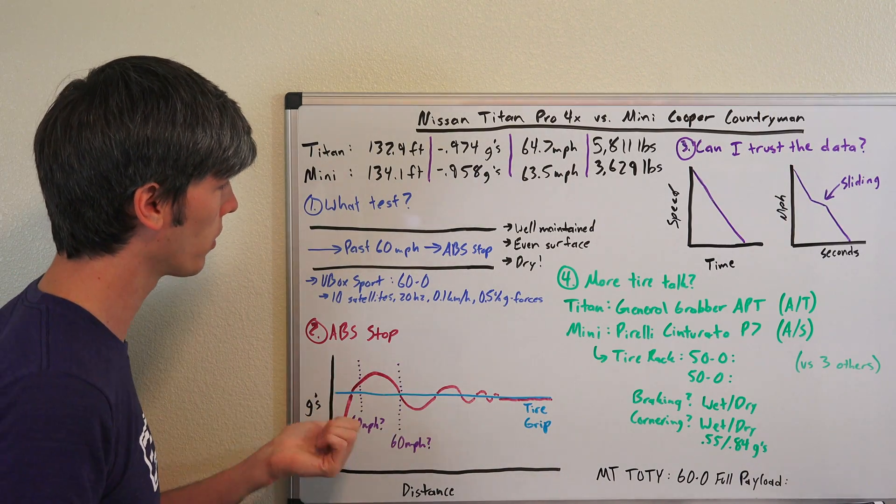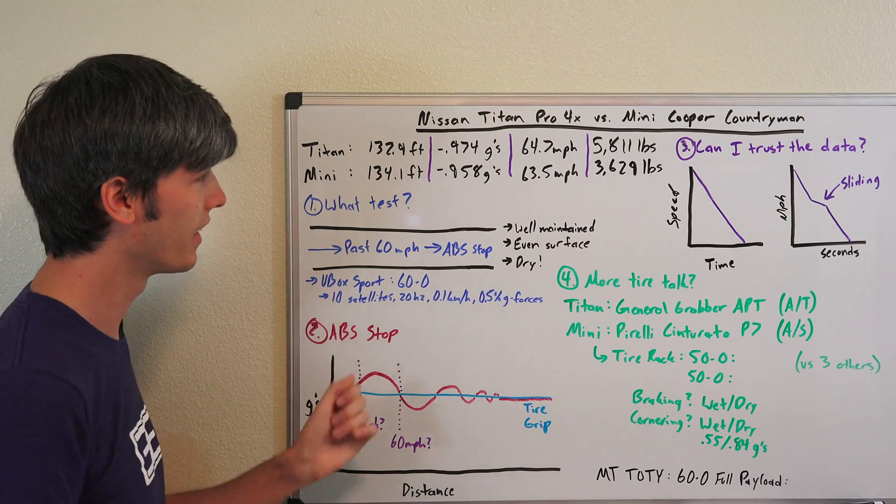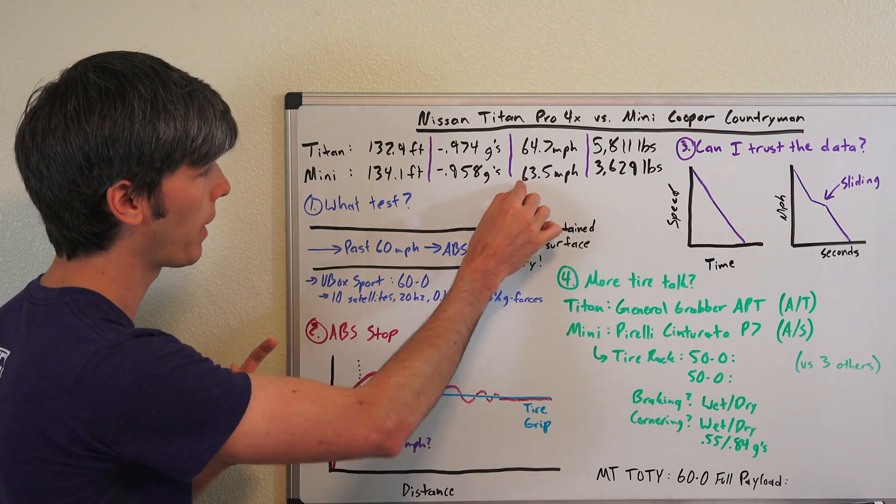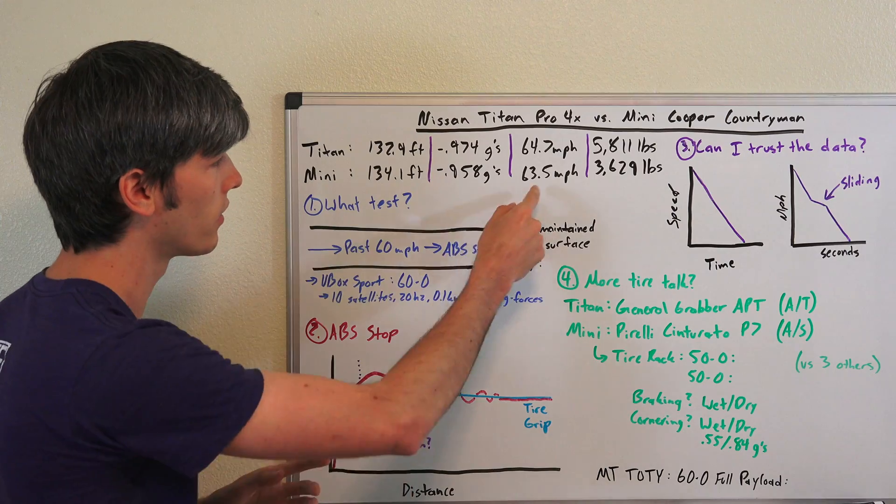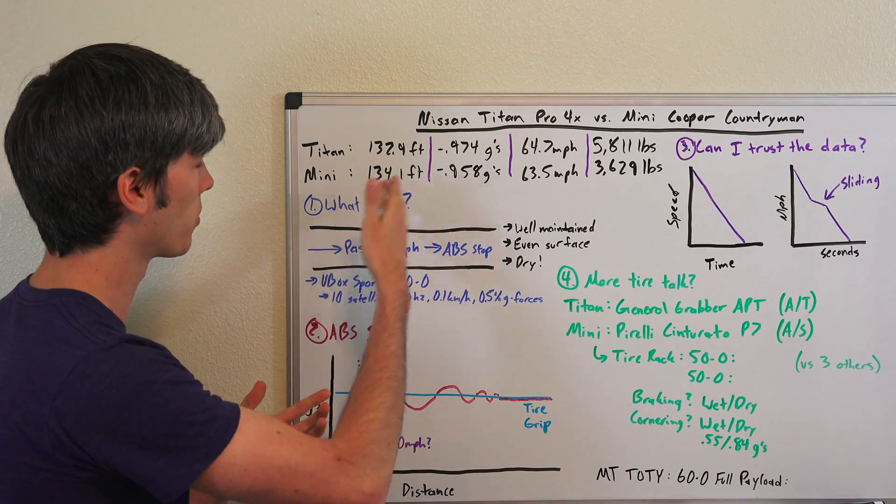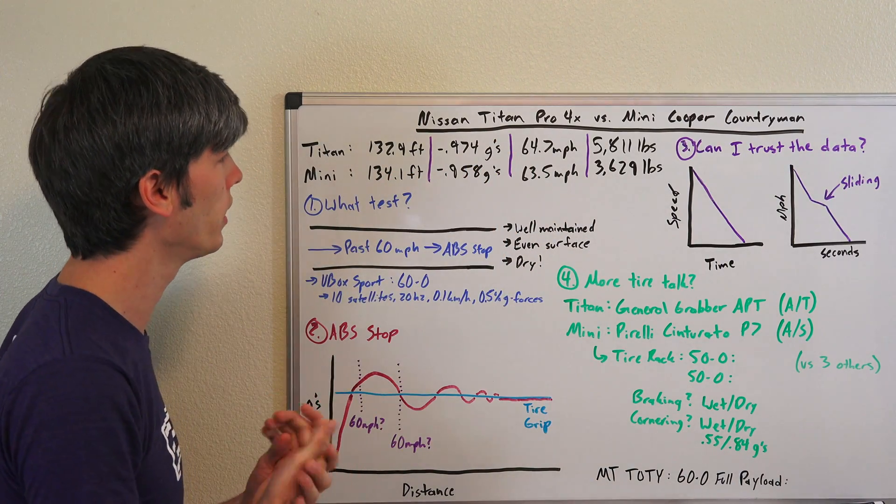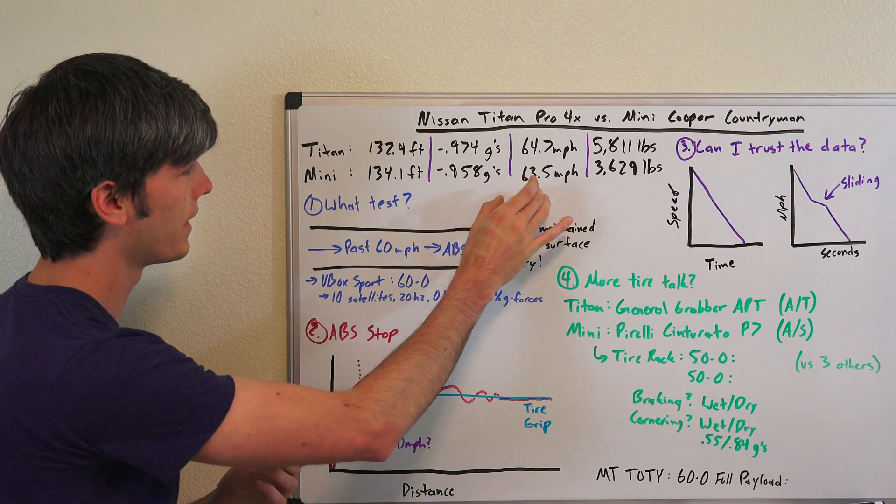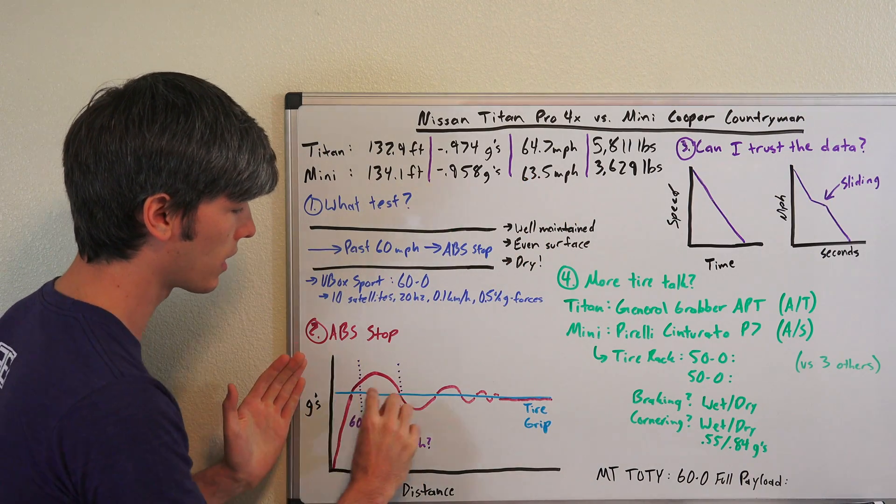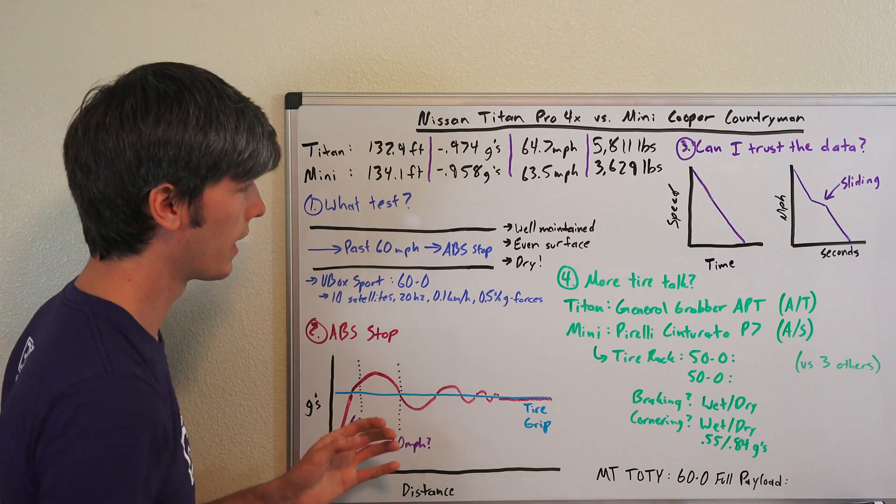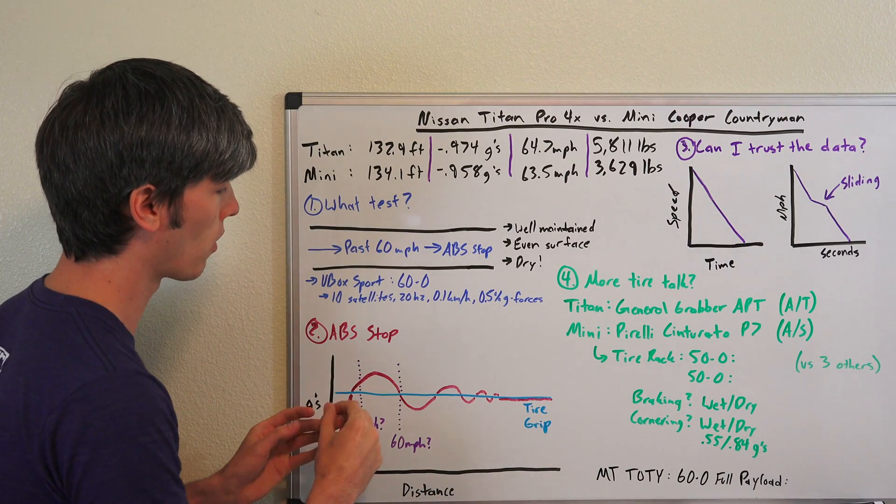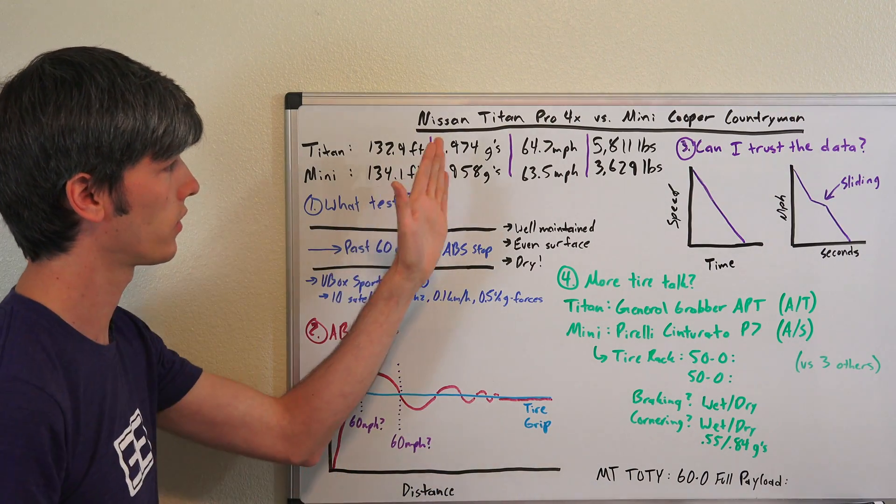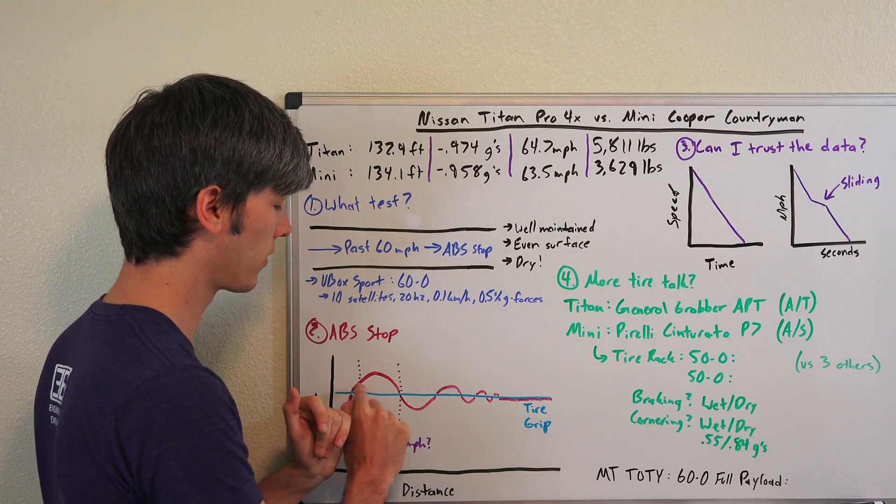The reason I accelerated past 60 to 64.7 and 63.5, those were the highest speeds I could get to before needing to slam on the brakes, is I wanted to make sure we had started to level off before we got to 60.